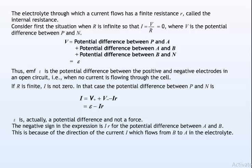Epsilon is actually a potential difference and not a force. There is a negative sign in the expression Ir for the potential difference between A and B. This is because of the direction of the current I, which flows from B to A in the electrolyte.